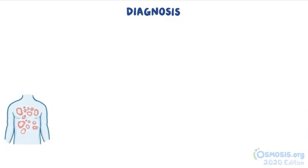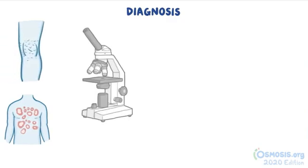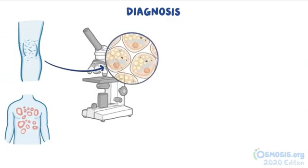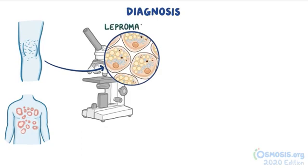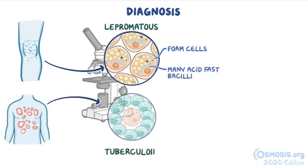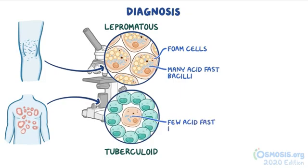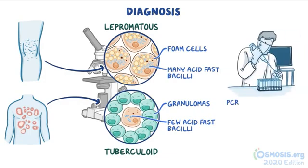Diagnosis can be done by identifying Mycobacterium leprae in a skin biopsy of an active lesion and examining it under a microscope. In the lepromatous form, there are lipid-laden macrophages, called foam cells, containing many acid-fast bacilli. While in the tuberculoid form, there are very few acid-fast bacilli and granulomas, which are collections of immune cells. Mycobacterium leprae can also be identified through PCR, which directly detects bacterial DNA.